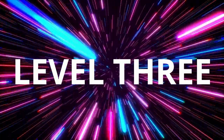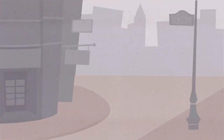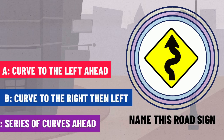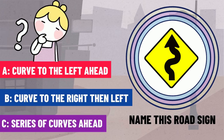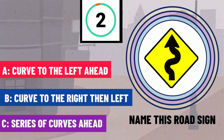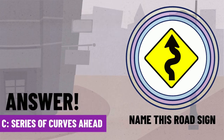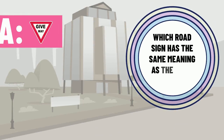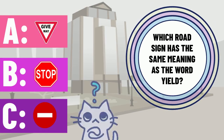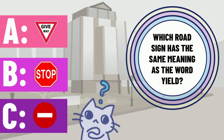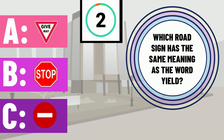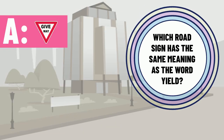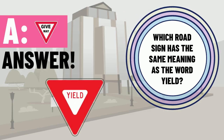Level 3. Question 11 — name this road sign. The correct answer is C — a series of curves ahead. Question 12 — which road sign has the same meaning as the word yield? The correct answer is A — give way.